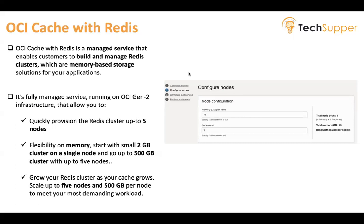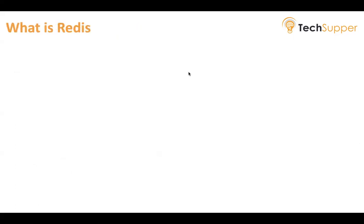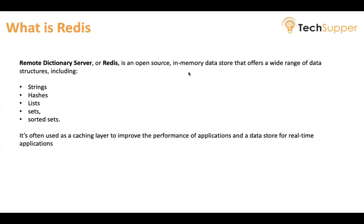Redis stands for Remote Dictionary Server — an open-source in-memory data store that offers a wide range of data structures including strings, hashes, lists, sets, and sorted sets. Redis is generally used whenever your application is latency-sensitive, meaning you need data immediately. It is often used as a caching layer to improve the performance of applications and as a data store for real-time applications wherever you need data in a faster manner.